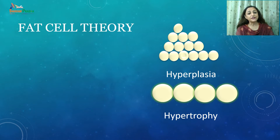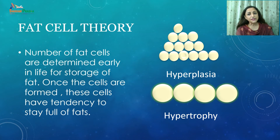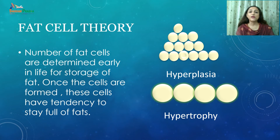The number of fat cells is determined early in life, and once these cells are formed they have a tendency to stay full of fats. Hypertrophy can increase the fat depot as much as 1000 times in size. Hyperplasia can occur mainly during growth periods, and may also occur when fat cells reach their maximum size. Increase in adipose tissue causing weight gain can be due to hyperplasia, hypertrophy, or both.